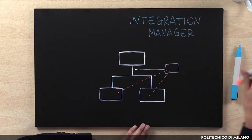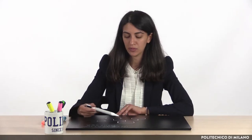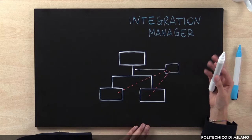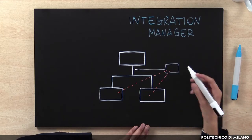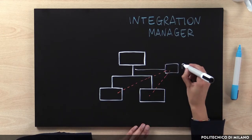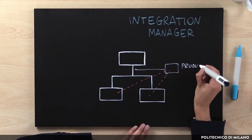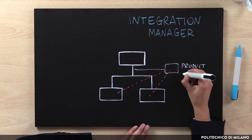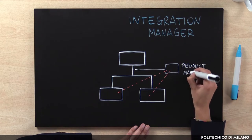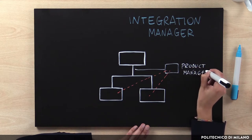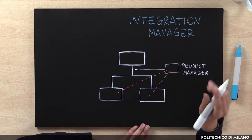They typically don't belong to a specific organizational unit, but they are independent organizational positions. A typical example of an integration manager is the product manager, in charge of coordinating the development, the production and the sale of a specific product, supervising the process across the different organizational units involved.